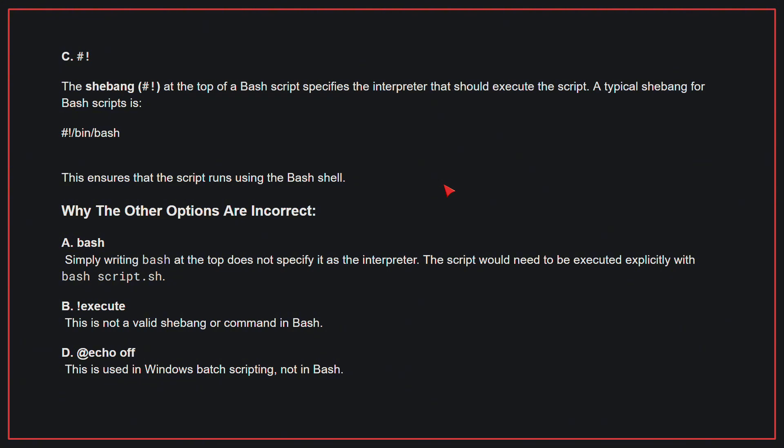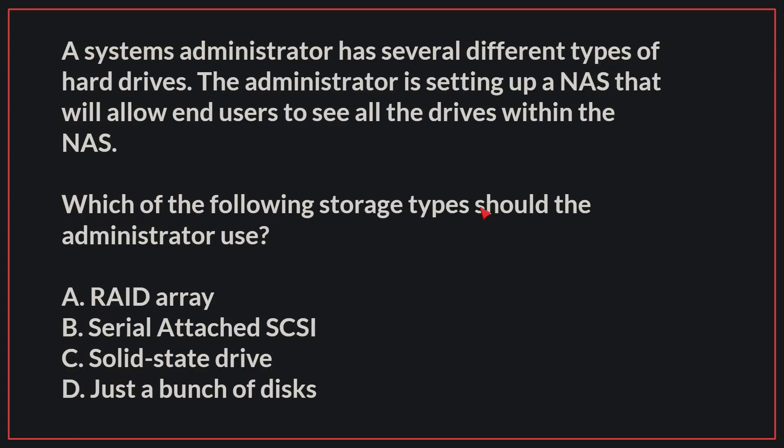B, exclamation mark execute: this is not a valid shebang or a command in bash. D, @echo off: this is used in Windows batch scripting, not in bash. Therefore, the correct answer is C, the shebang.